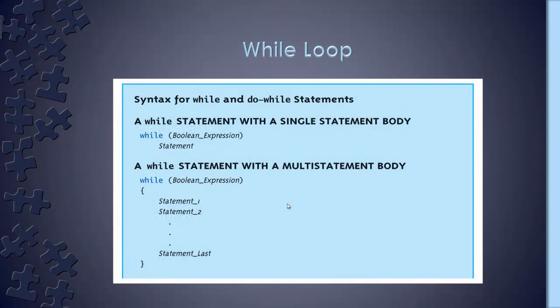Here's the while loop: while this expression is true, do this — the 'do this' part goes in curly braces. The boolean expression can be anything: while vehicle class is greater than one, while time is less than something, while this AND this. As long as that expression is true, continue to run whatever is in the curly brackets.